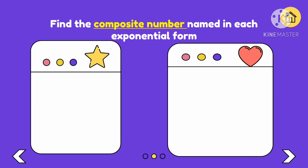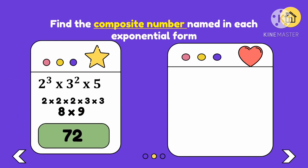Let us try this activity. Find the composite number named in each exponential form. We have 2 raised to the 3rd power or 2 cubed times 3 squared times 5. We won't expand 5 because it's a prime number. Expand 2 raised to the 3rd power and 3 raised to the 2nd power. This becomes 2 times 2 times 2. We write 2 three times because its exponent is 3. We write 3 two times because its exponent is 2. Then multiply the numbers. 2 times 2 times 2 is 8, and 3 times 3 is 9. Multiply the 2 numbers to get 360 as the composite number for 2 cubed times 3 squared times 5.